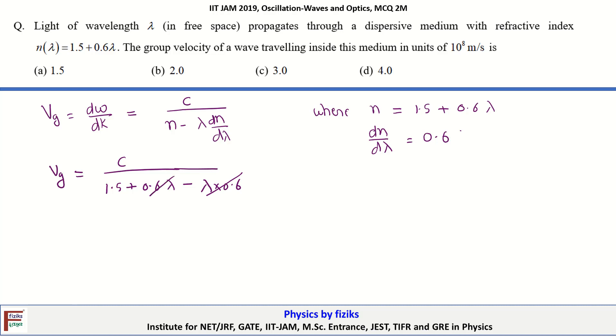These two terms cancel each other. The vg becomes c upon 1.5, where c is 3 into 10 to the power 8 divided by 1.5. This becomes 2 into 10 to the power 8 meter per second.